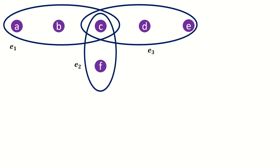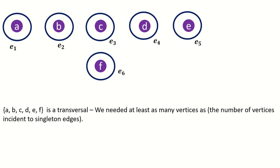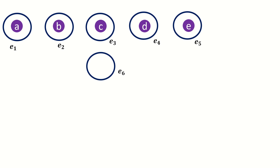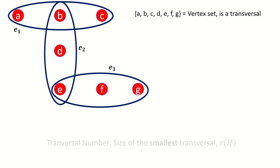Also, if all edges are singletons, then to form a transversal we need at least as many vertices as there are edges. More generally, we always need at least as many vertices in a transversal as there are vertices contained by singleton edges. If there's any empty edge in a hypergraph, there's no transversal. But as long as there are no empty edges, there is a transversal — the easiest one to find is the set of all vertices. Since we can always find a transversal, we ask: what's the size of the smallest transversal? That number is known as the transversal number, tau of H.